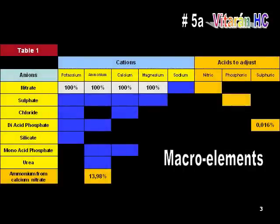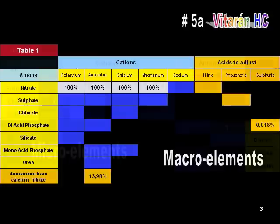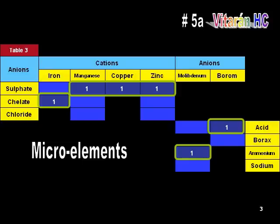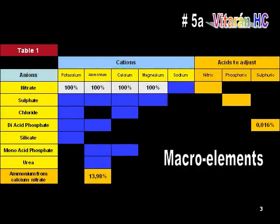These are the steps to follow. There are four tables in sheet number 5A of the software. First, table number one is used for the selection of the macro element cells. Table number three is for choosing the micro elements. By inserting the figure one in the appropriate cell, one raw material for each micro element ion is selected. No other actions are needed to pick the trace elements.